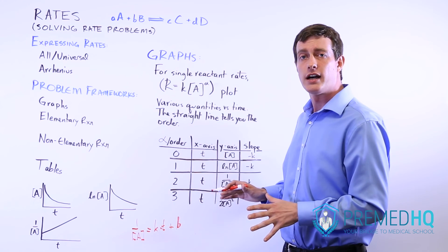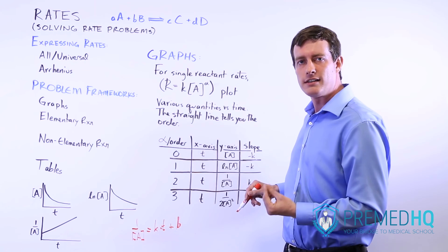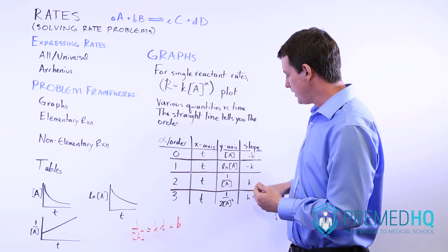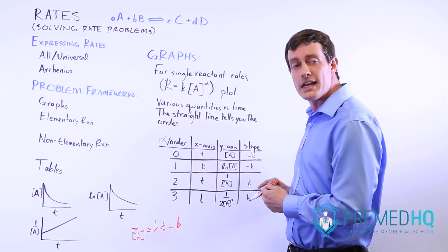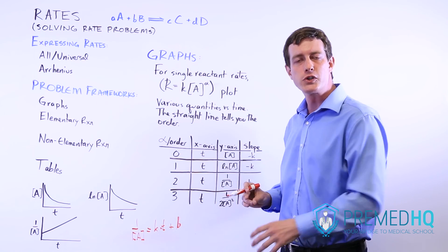The slope of the line tells you k, the rate constant, and it will either be positive in these two cases, or it will be negative if it's a zero or a first order reaction.